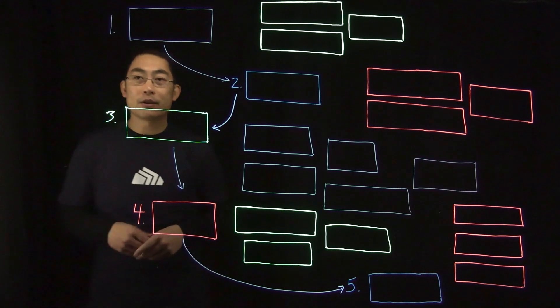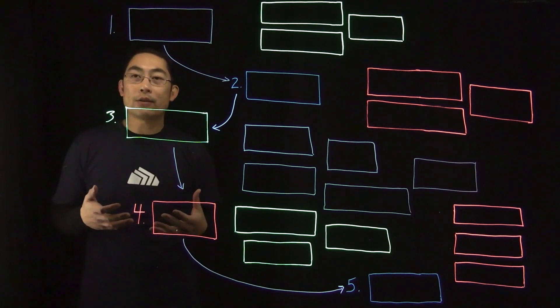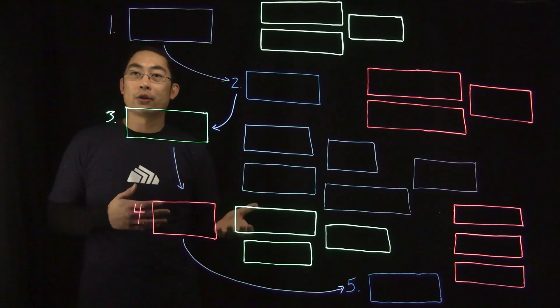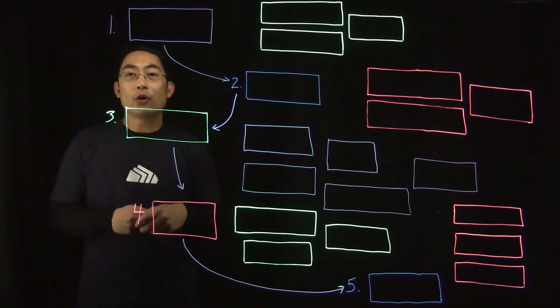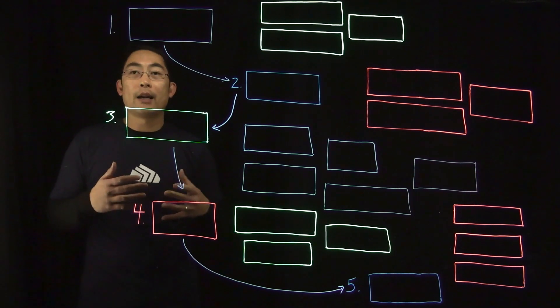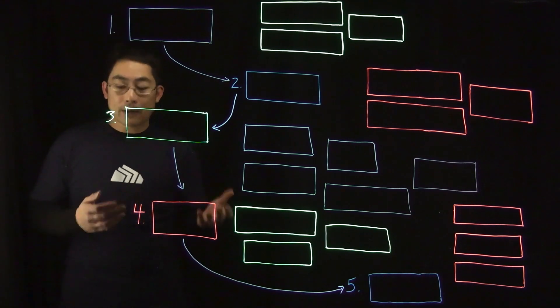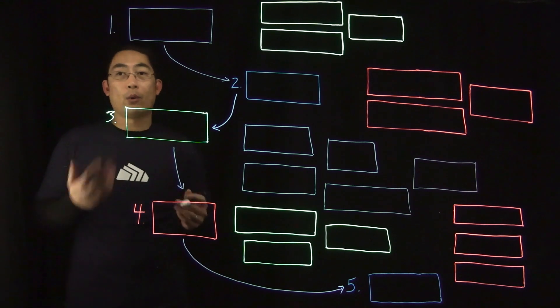At StackRox, we call this the container security maturity model, and it's useful because the security issues you face are going to be different depending on the stage of your usage. Here are five stages I'm going to go through and some security steps that you can take for each one.